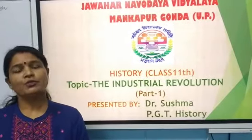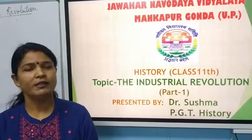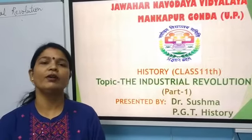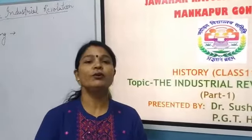This chapter is divided in two parts. In the first part, we are going to cover what were the causes of the Industrial Revolution, why it happened in Britain, and what was the condition of workers. Later, we will be discussing the second part.